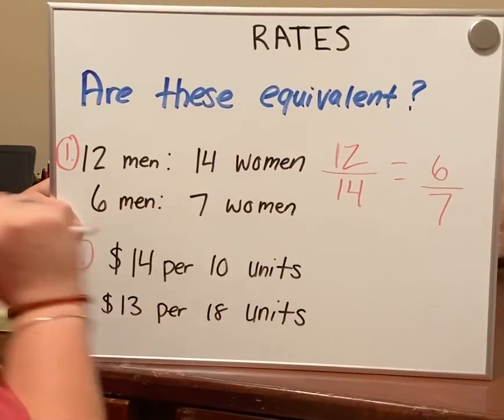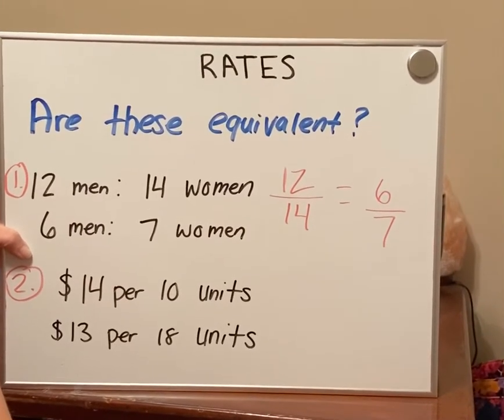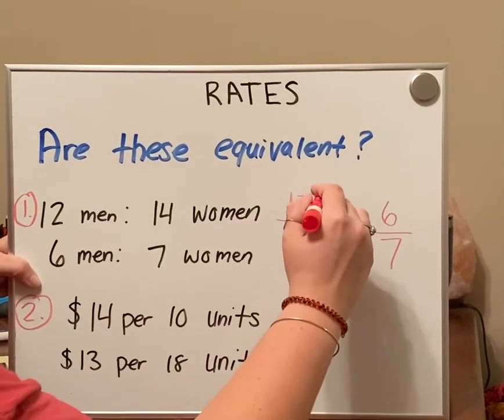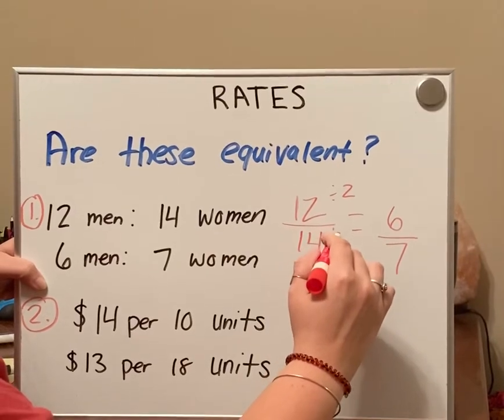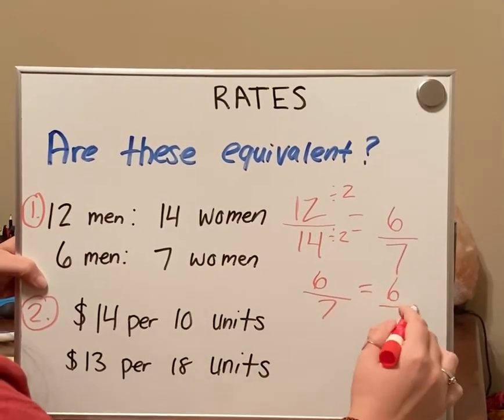So now we're going to see if we can reduce 12 over 14. Well, we can. 2 will go into 12 and into 14. So we have divided by 2. So we have 6. 14 divided by 2 is 7 equals 6 over 7.